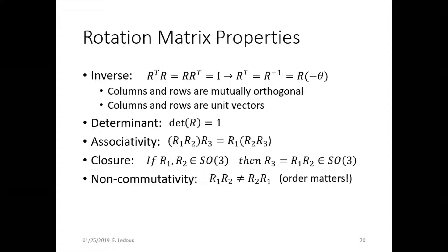For associativity, you can multiply multiple rotation matrices together. As long as you keep the order consistent, you end up with the same answer. But order matters — it's not commutative. So you can't rotate around x and then around y and get the same answer as if you rotated around y and then around x.